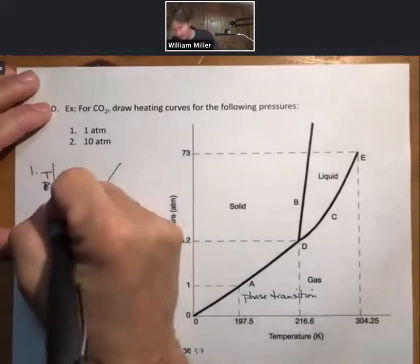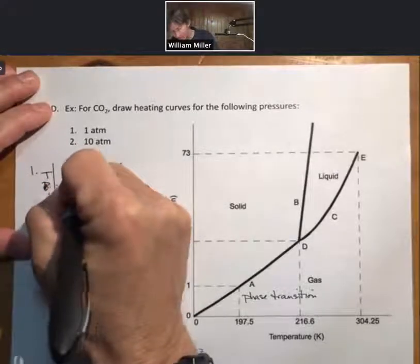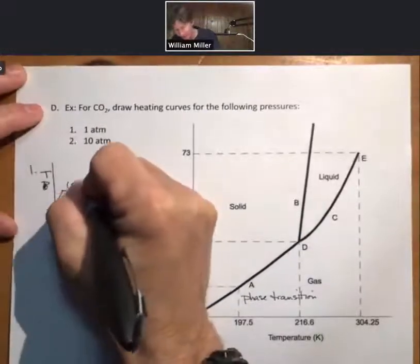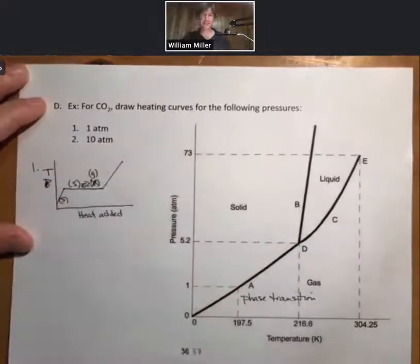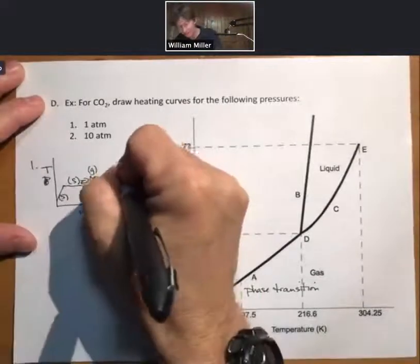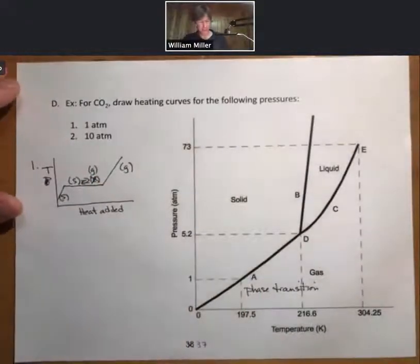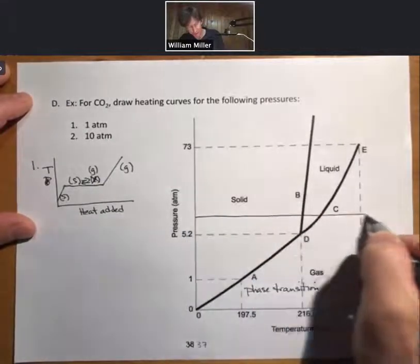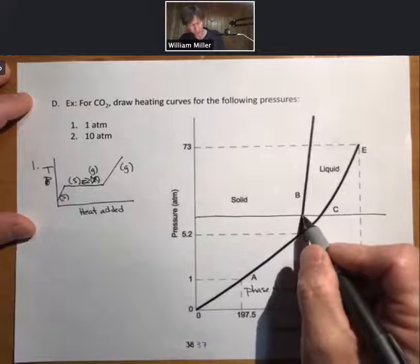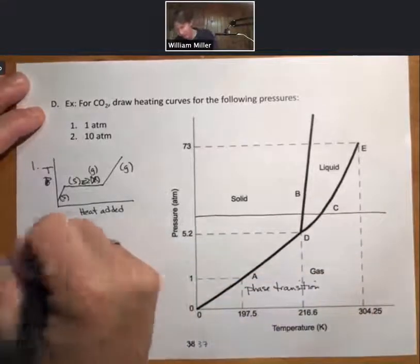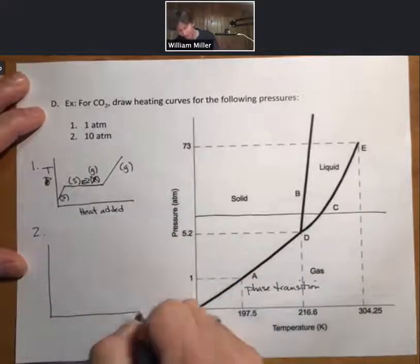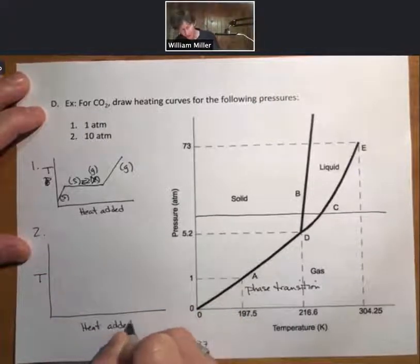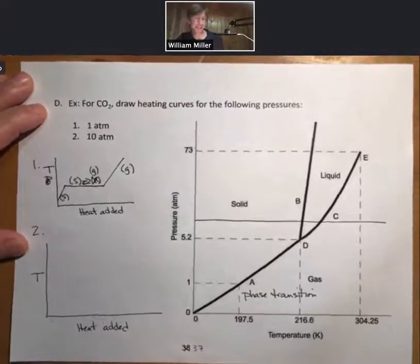We're going to have solid phase heating, then a phase transition. So solid to—solid to liquid—I mean, sorry—solid to gas. And then gas. And then if we repeat this process at 10 atmospheres, let's just say somewhere around here, we will get a solid to liquid and a liquid to gas transition.